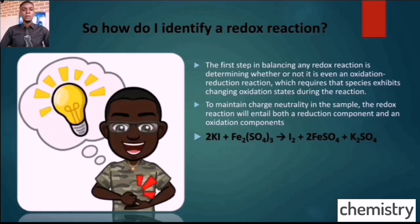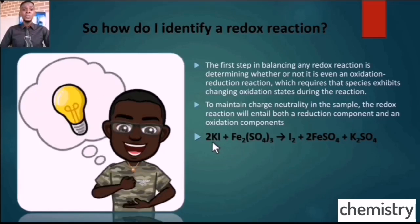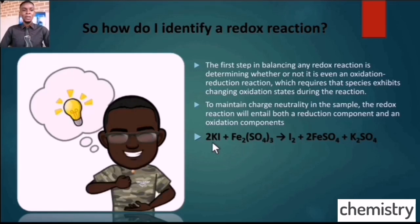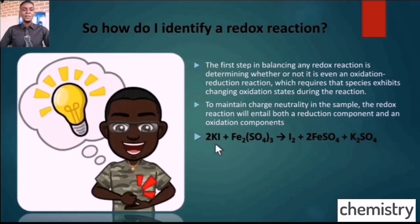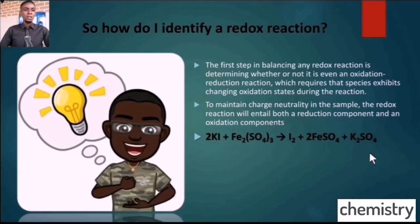Just looking at it ordinarily as a student, you would not be able to identify if it's a Redox Reaction. But for those that understand the oxidation state of the various elements in this equation, you would be able to identify easily if any chemical species has either lost or gained an electron. Let us consider it — potassium in a combined state has a fixed oxidation number of plus one, so potassium is plus one on both sides.